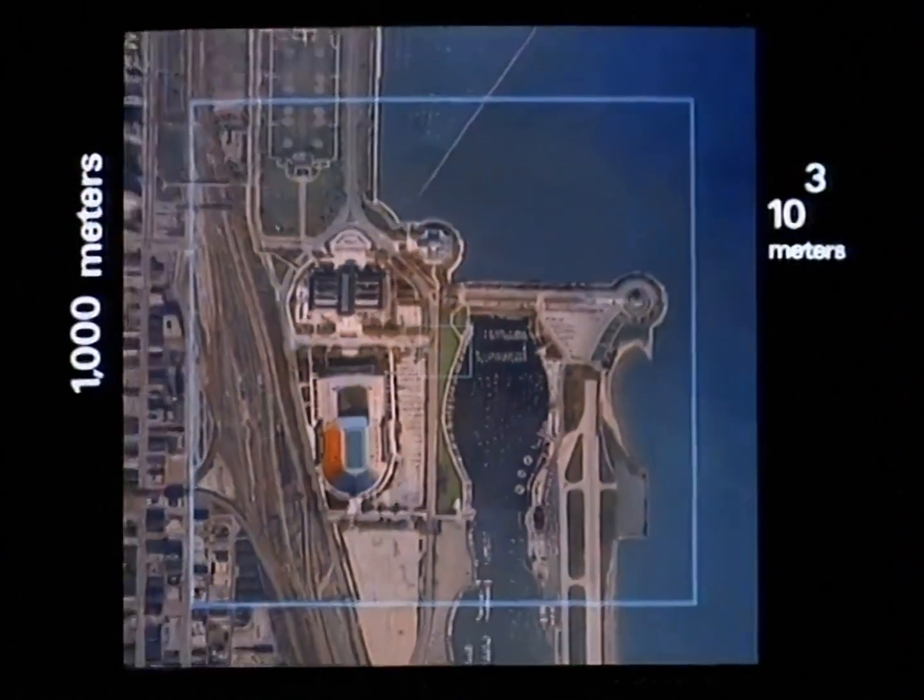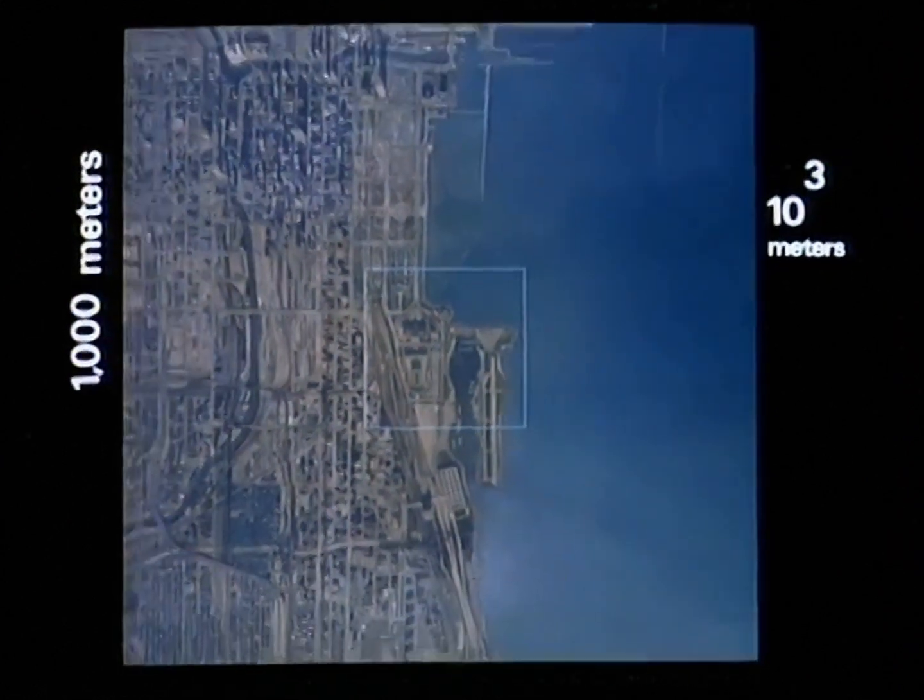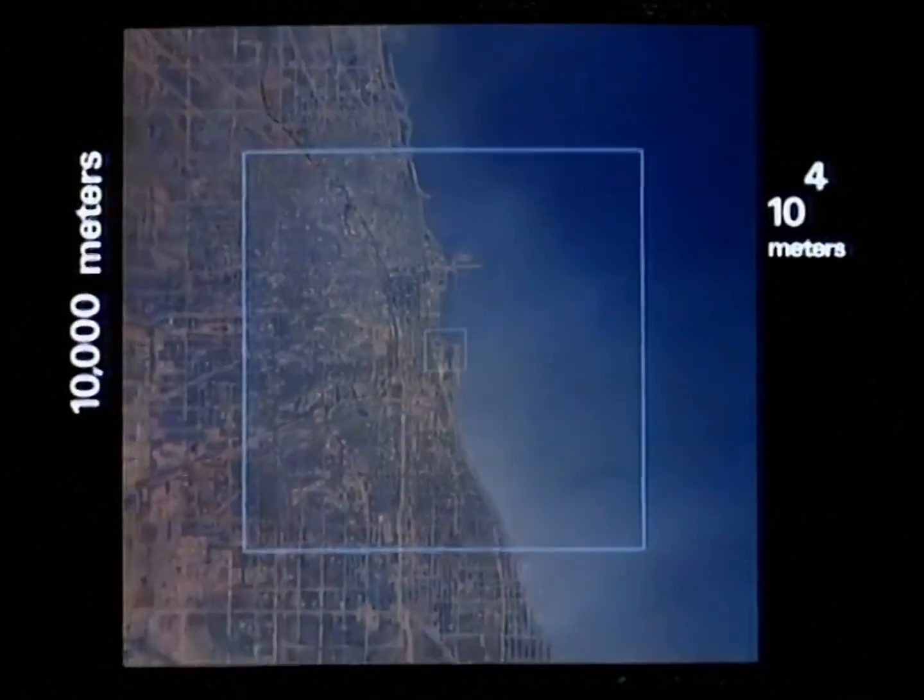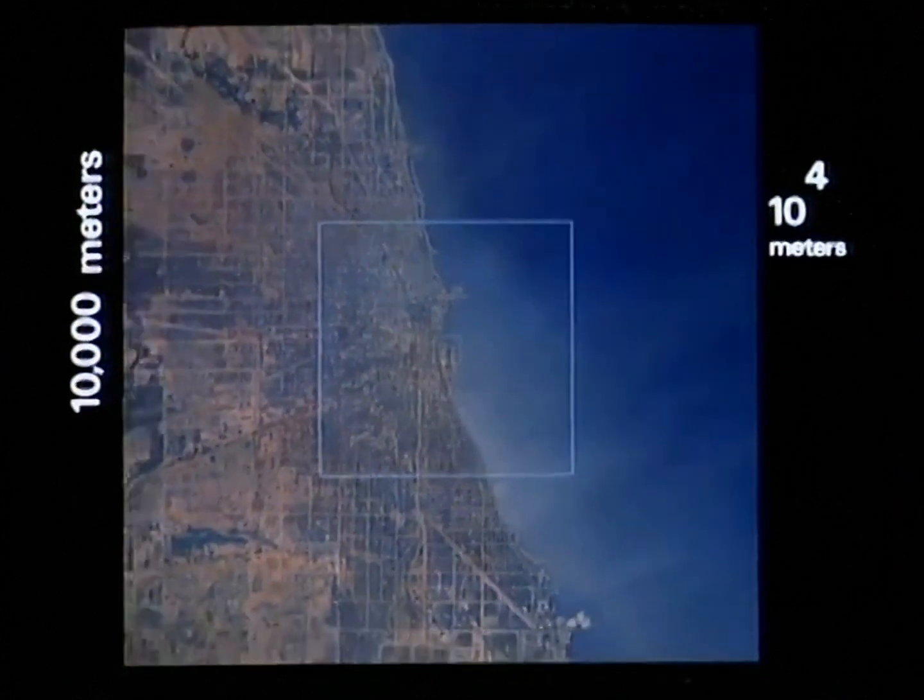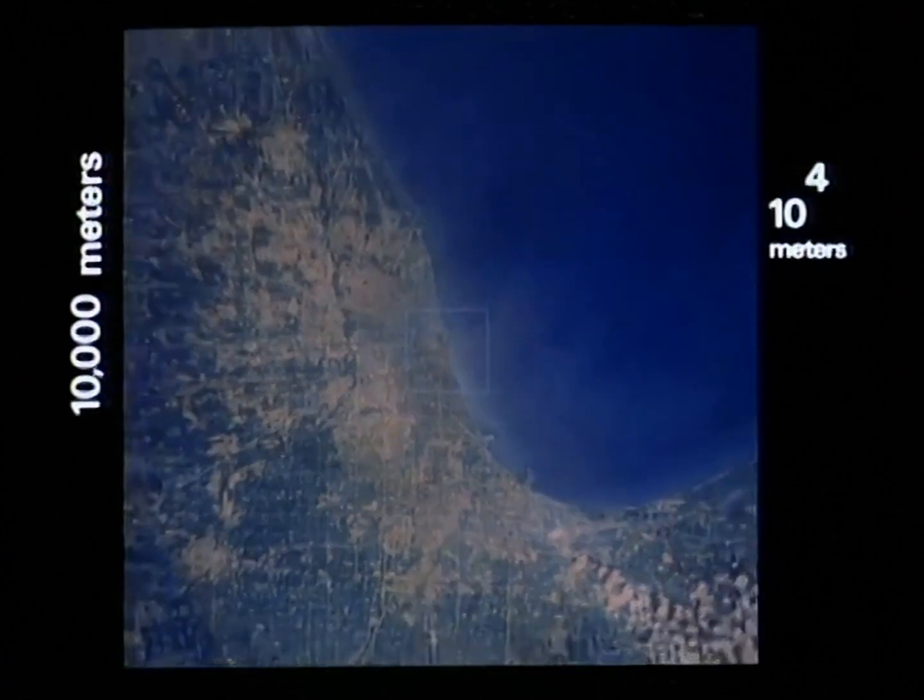This square is a kilometer wide, one thousand meters. The distance a racing car can travel in ten seconds. We see the great city on the lake shore. Ten to the fourth meters, ten kilometers. The distance a supersonic airplane can travel in ten seconds. We see first the rounded end of Lake Michigan, then the whole great lake.